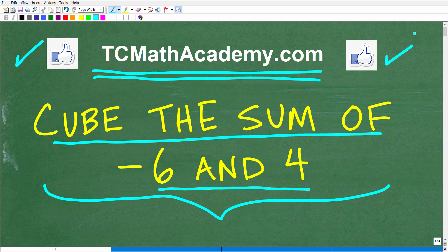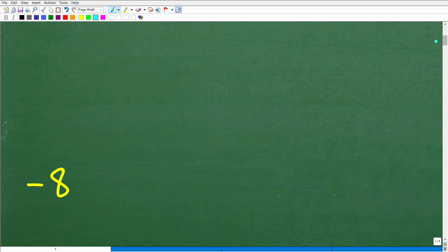Let's go ahead and take a look at the answer here. Cube the sum of negative 6 and 4. The correct answer is negative 8.